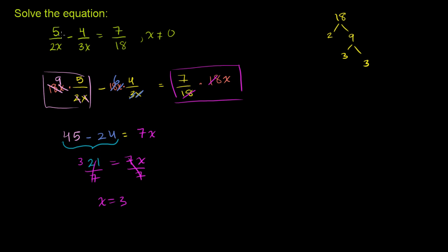So we have 5 over 2x, so that's the same thing as 5 over 2 times 3, minus 4 over 3 times 3. So this is 5 sixths minus 4 over 9.